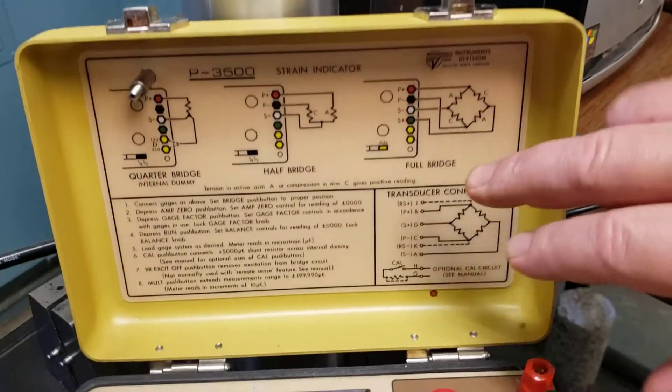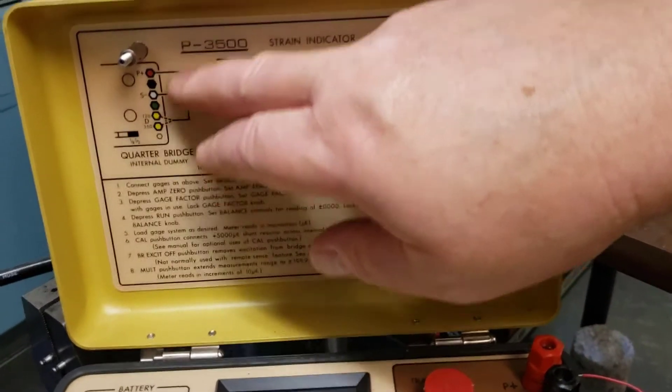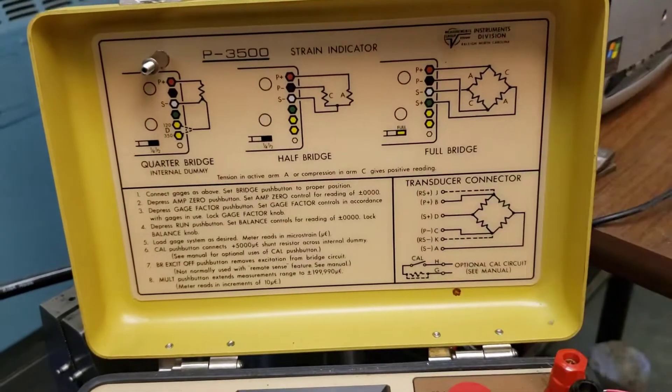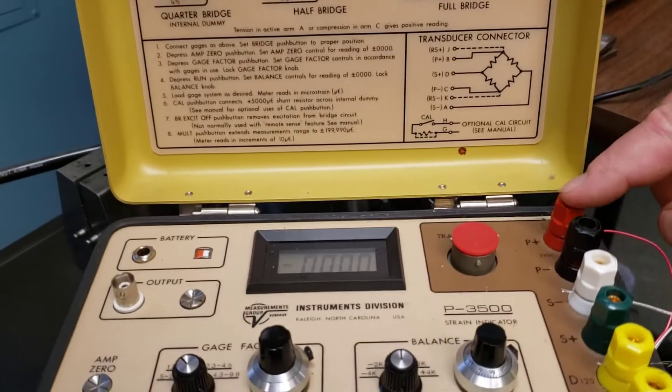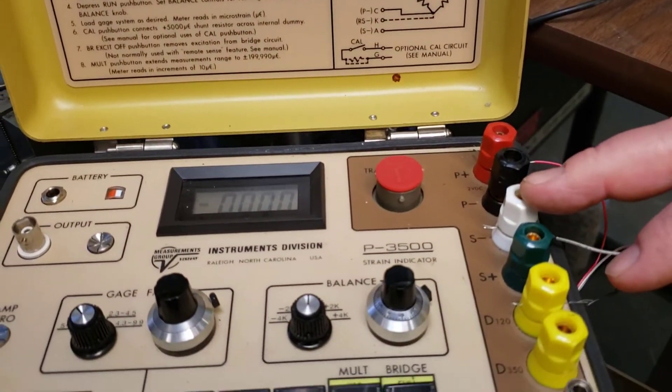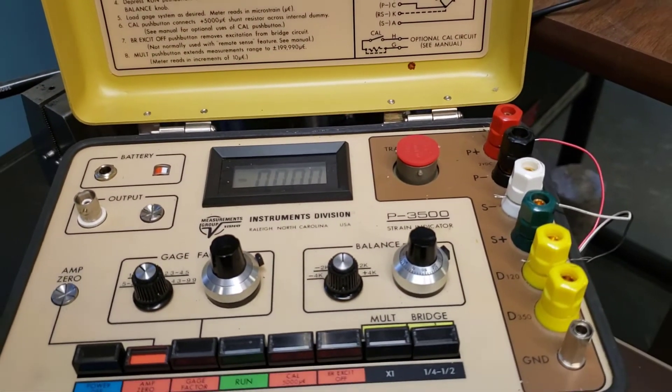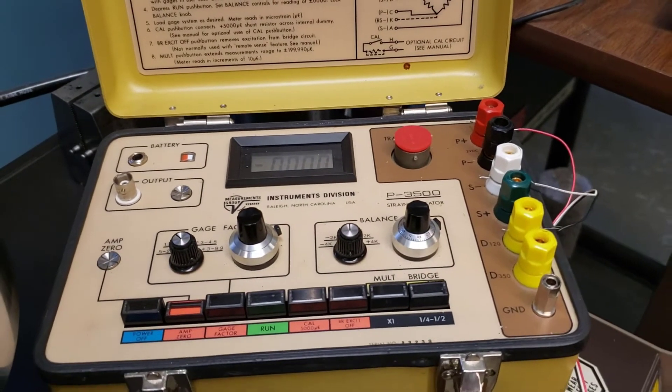It's a quarter bridge, so here's my connection over here on the left. I can see that the lone side goes to the red, and the other two connect to the white and to the yellow. So we make that connection.